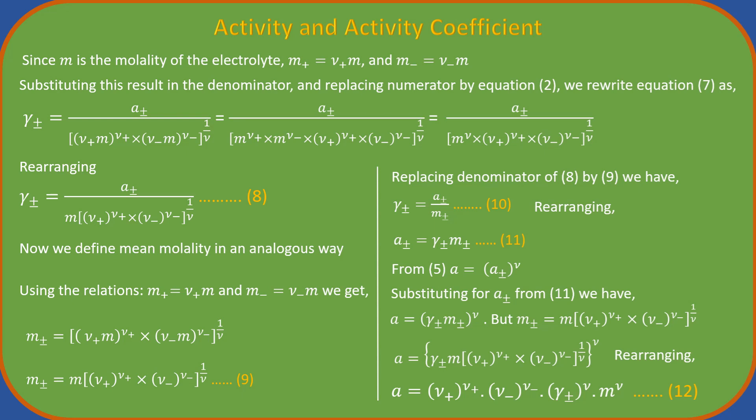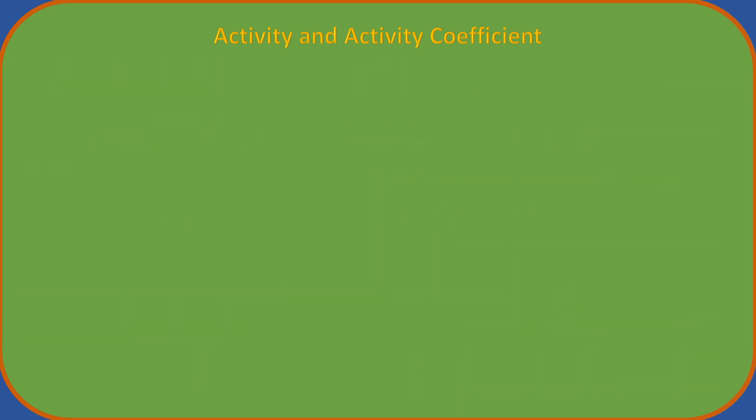Finally, we got an equation for calculating activity of an electrolyte from mean activity coefficient and molality. Let us do some calculations based on this. For uni-univalent electrolytes like sodium chloride, potassium chloride etc., the number of positive and negative ions are one each, and the charge on each ion will be unity. Hence equation 12 becomes. For sodium sulfate we calculate activity in the following way. Let's take one more example, copper sulfate.